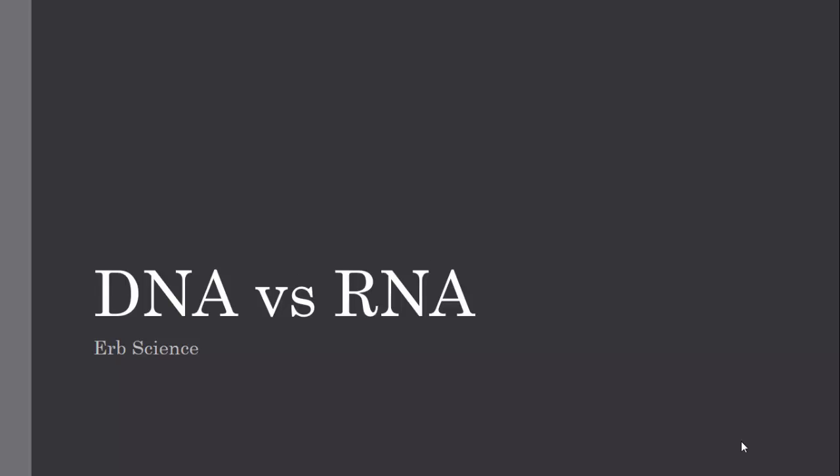As we begin this unit, we're going to be taking a look at how adenine, cytosine, guanine, thymine, and uracil build codons and anticodons. We're going to talk about mRNA, tRNA, and the best place to start is at the beginning. In this podcast, we're going to take a look at the difference between DNA and RNA.